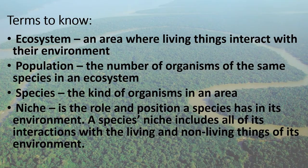First, let us review some of the terms that we need to know. Ecosystem: it is an area where living things interact with their environment. Population: the number of organisms of the same species in an ecosystem. Species: the kind of organisms in an area.